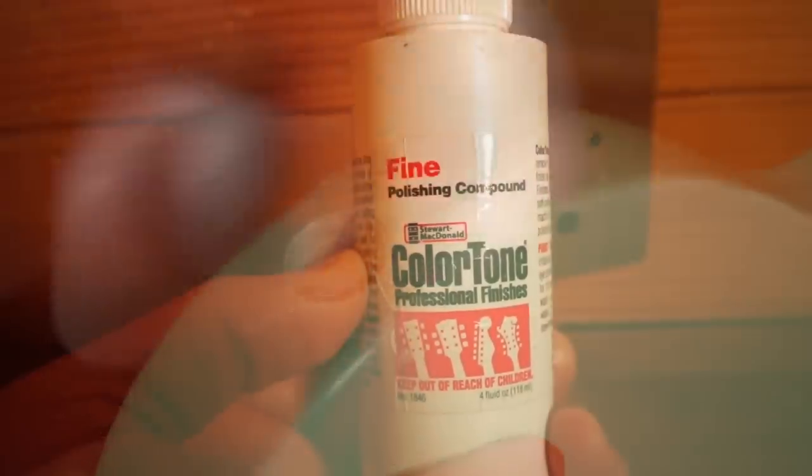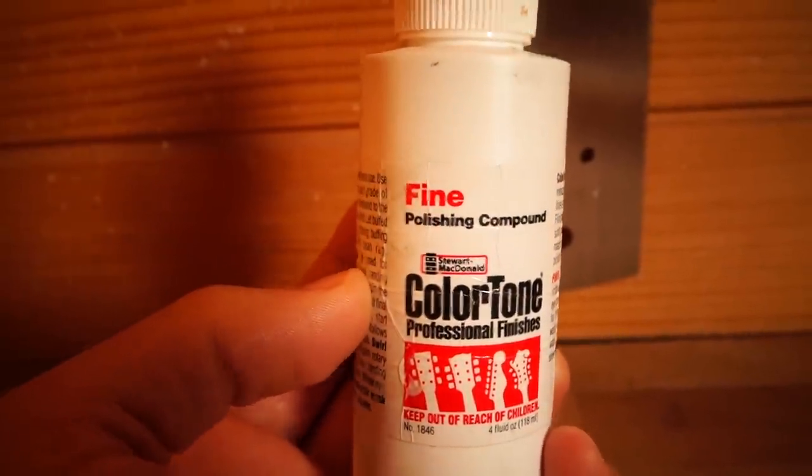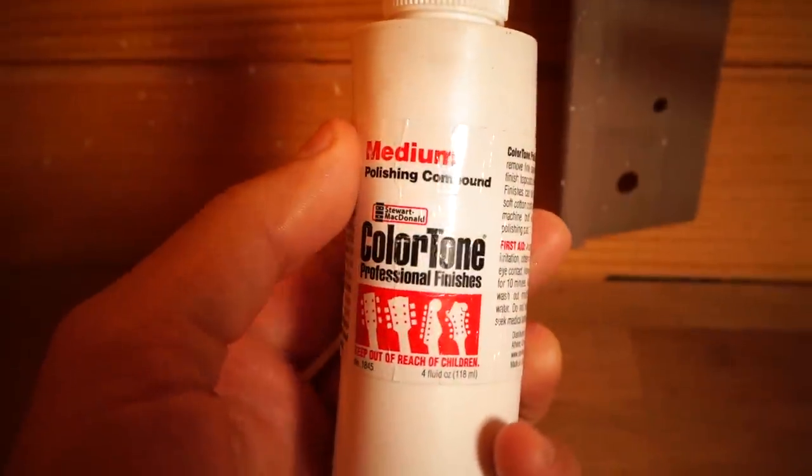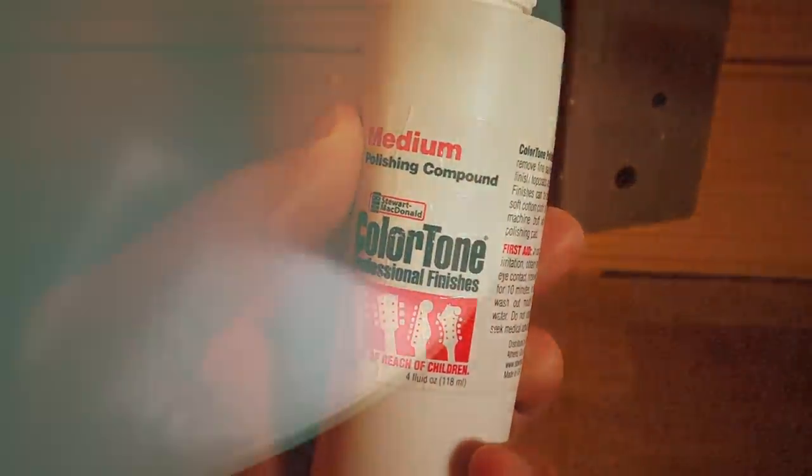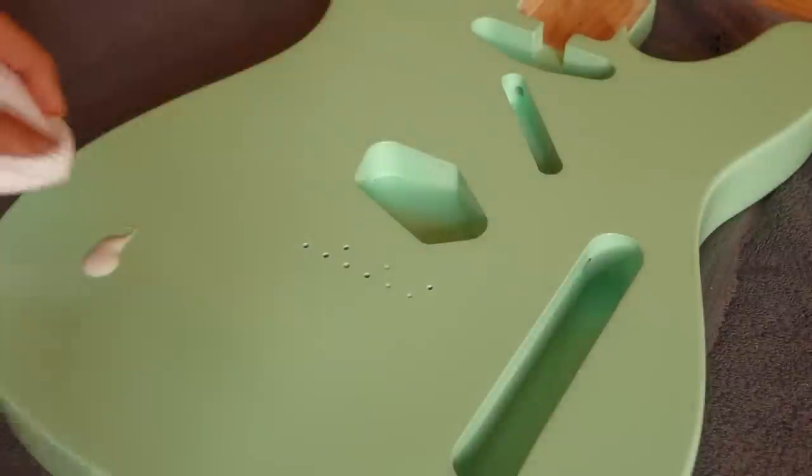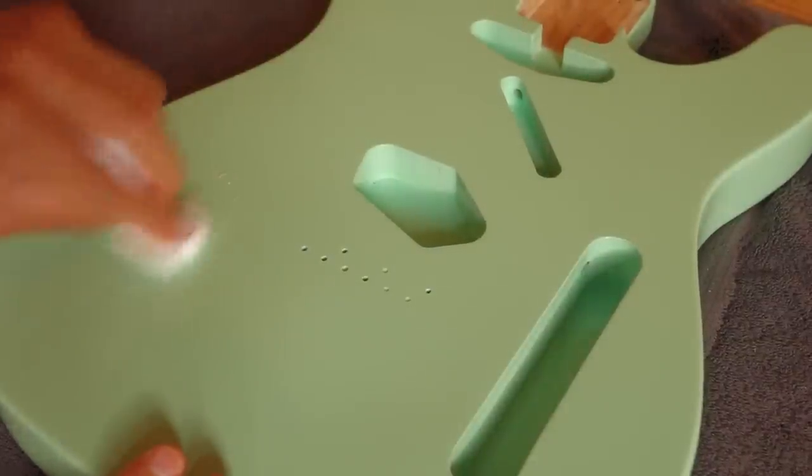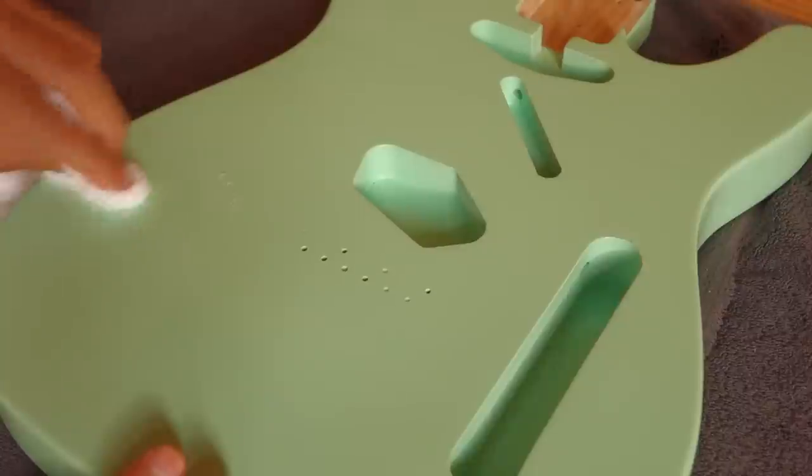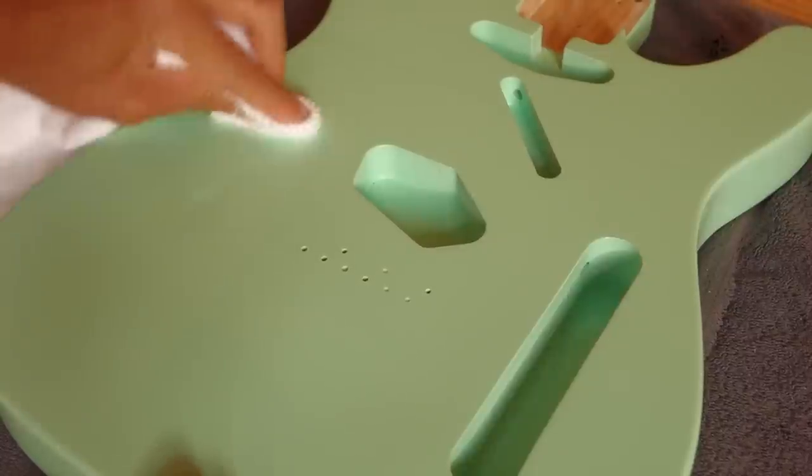As I mentioned before I'll start with the fine compound. Depending on the quality of your sanding job you might have to start with the medium compound. You'll immediately start seeing the difference when you start polishing. Now it's very difficult to show you what exactly it is you want to see before you can move on to a finer compound, but let's just say you want to get rid of all of the scratch marks at this stage. And you basically want to go at it until that's the case. For an entire body it'll definitely take a couple of hours to get it perfect but the results will be very rewarding so be patient.